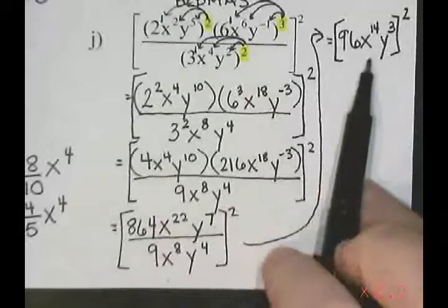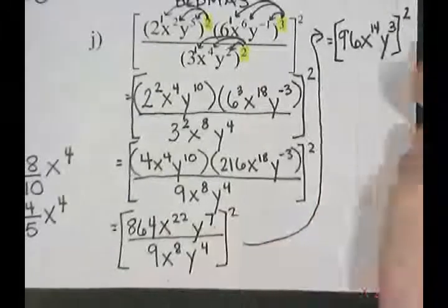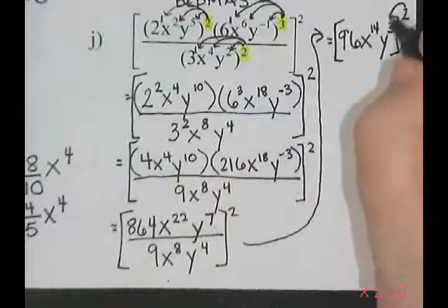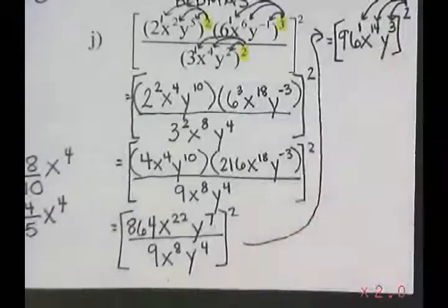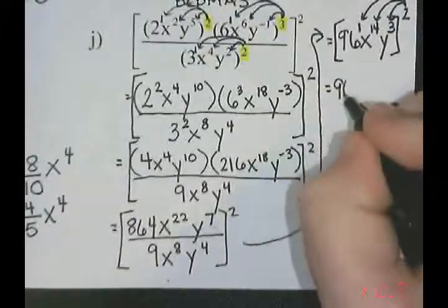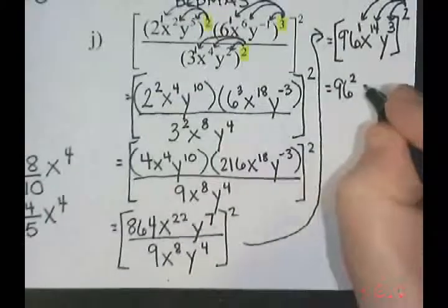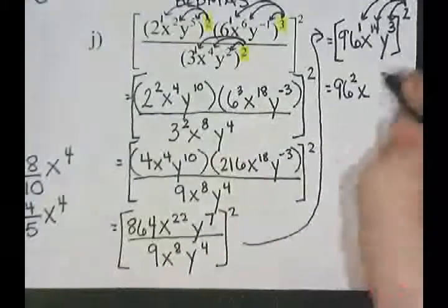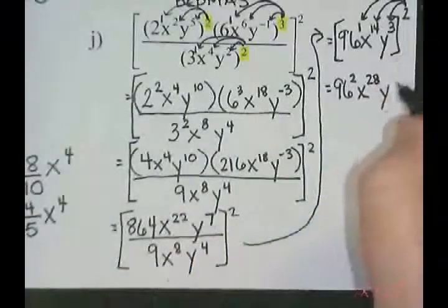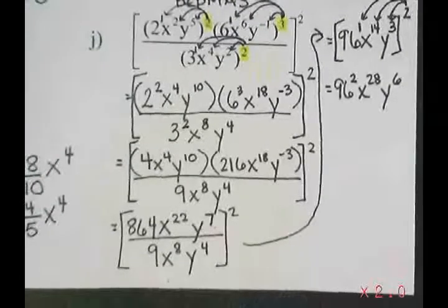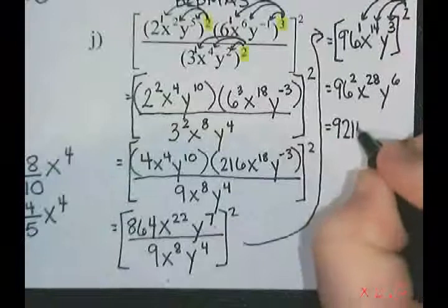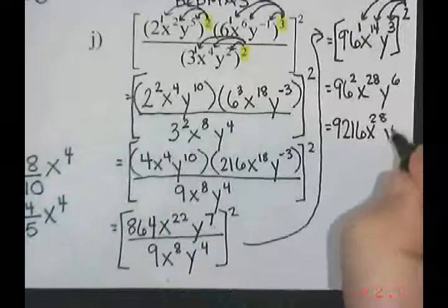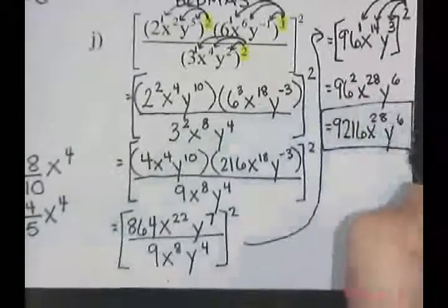Now that I've simplified everything inside the bracket, we're going to do the exponent. I'm going to take that exponent of 2 and distribute it through — multiplying it into the 3 on y, the 14 on x, and that 96 has a secret exponent of 1. So 96 to the power of 1 times 2 is 2. 96 squared is 9,216. So the final answer is 9,216 x to the 28, y to the 6.